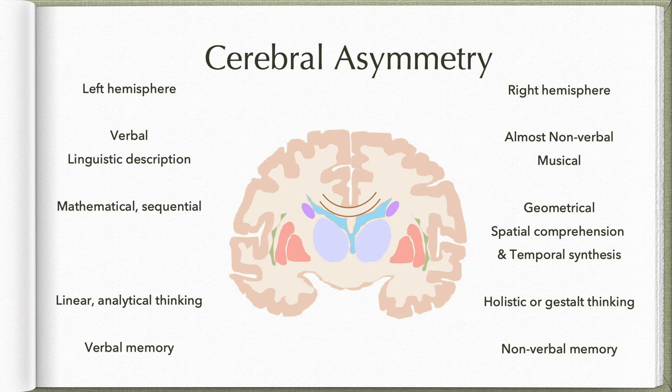The left hemisphere is involved in the arithmetic part of mathematics and also in sequential thinking. Whereas the right hemisphere is involved in geometrical analysis, spatial comprehension, and temporal synthesis. The left hemisphere is involved in linear analytical thinking — it is more of an individual, small-scale thinking.